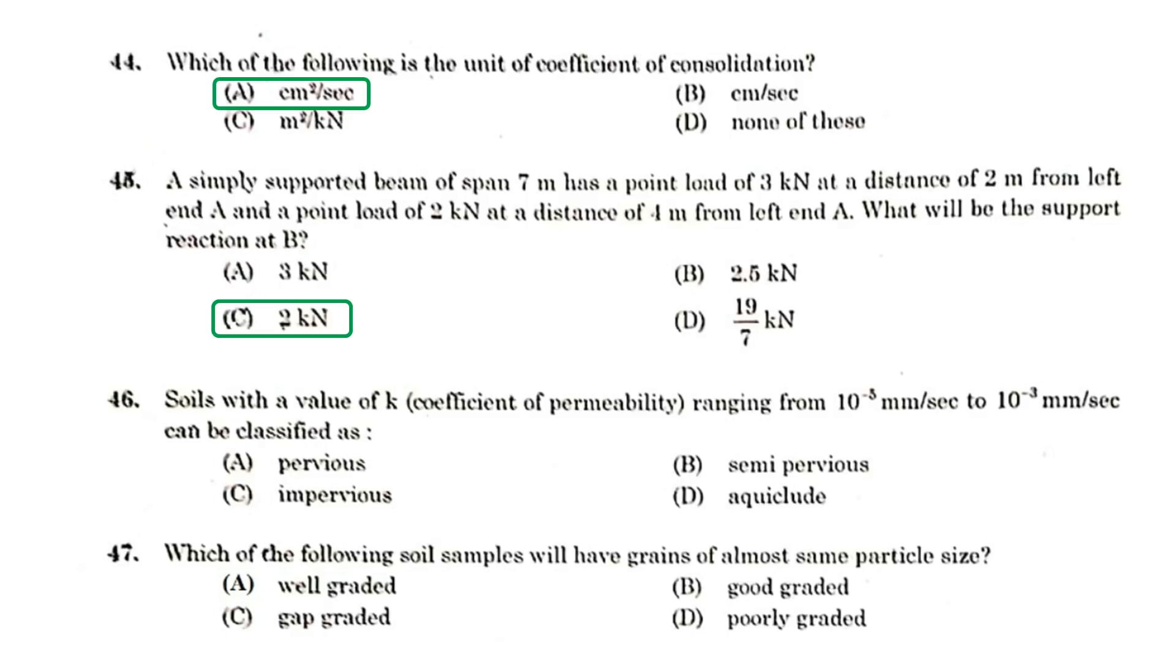Soils with a value of coefficient of permeability ranging from 10 raised to minus 5 mm per second to 10 raised to minus 3 mm per second can be classified as a semi-pervious soil. Which of the following soil samples will have grains of almost same particle size? Poorly graded soil.